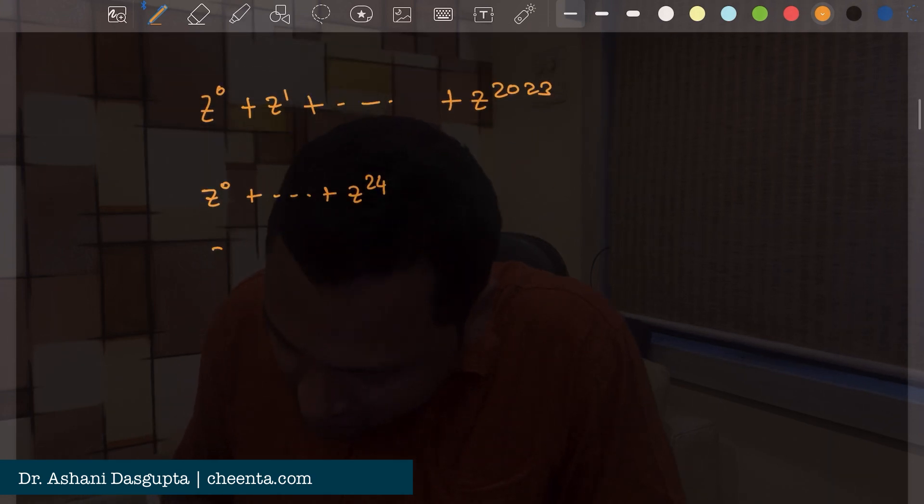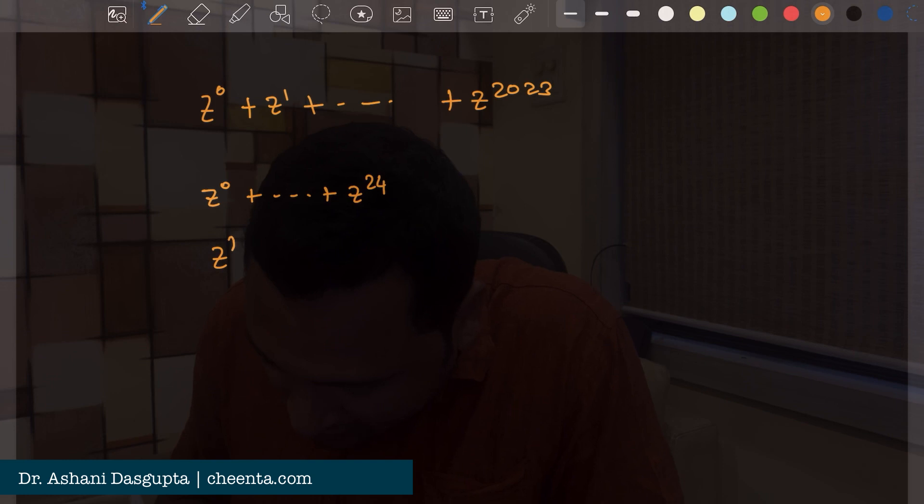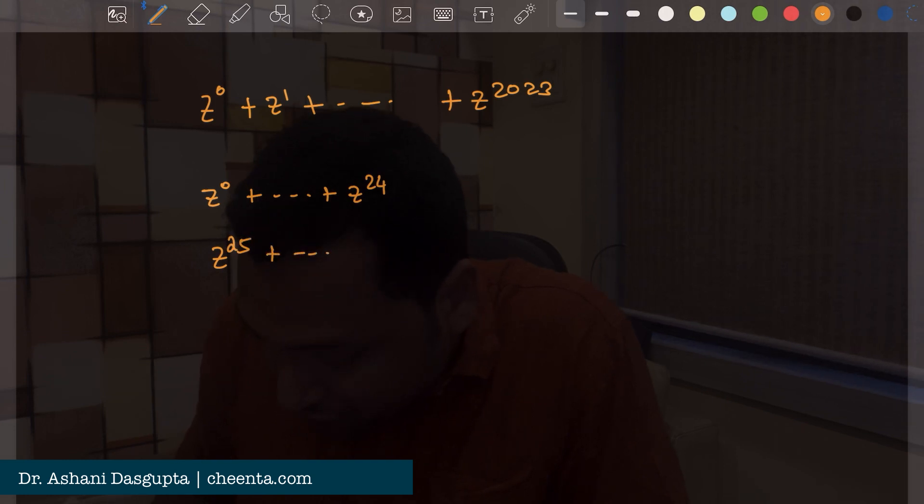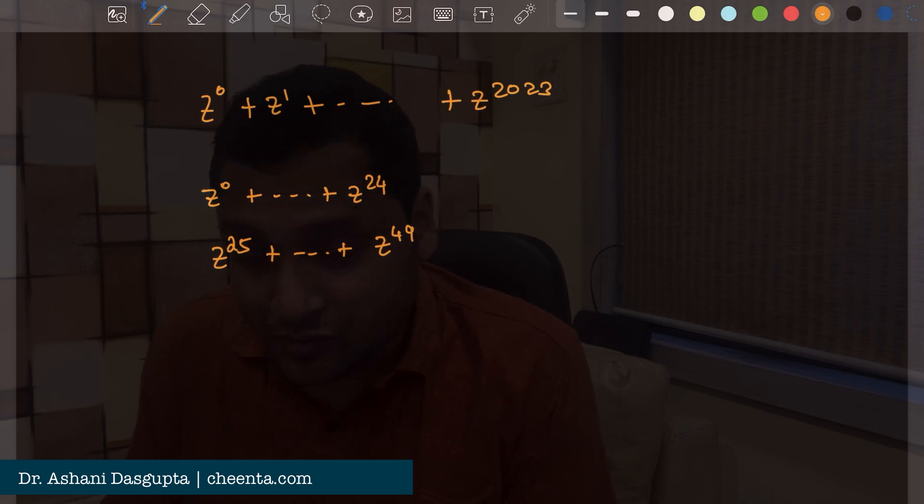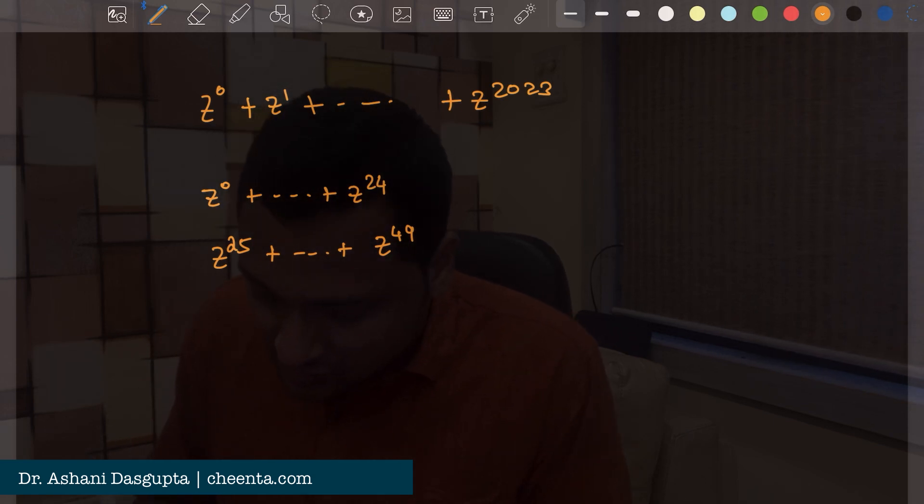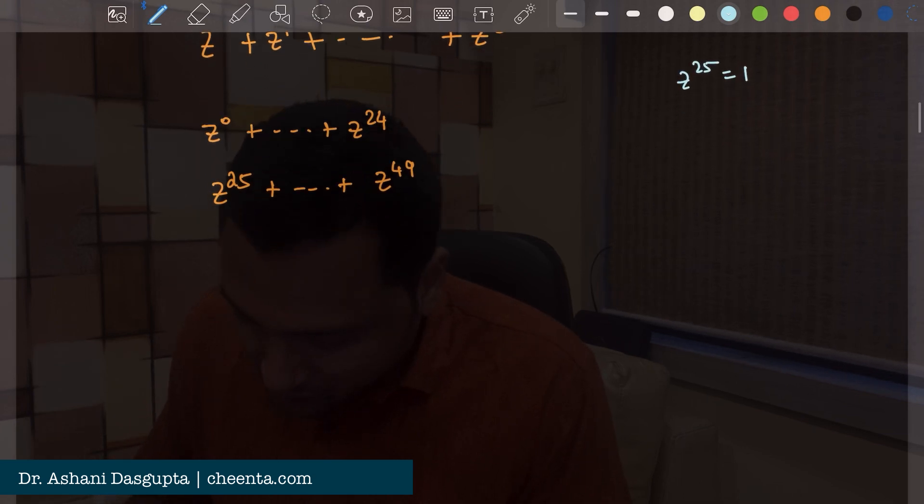Now if we start from z to the power 25 up to z to the power 49 that would again be 0. Why? Because well I can reduce it using the fact that z to the power 25 is 1.